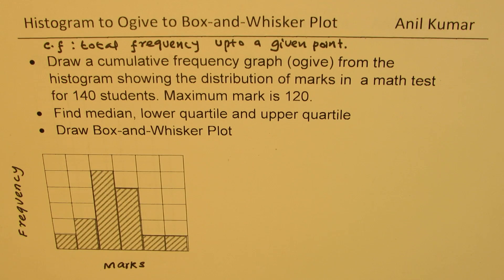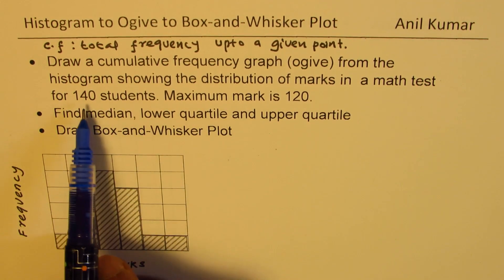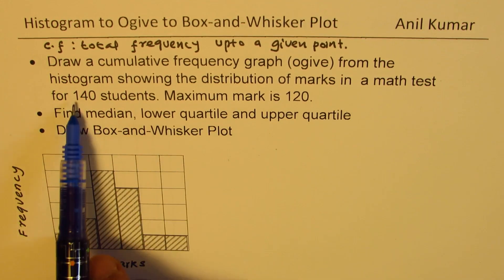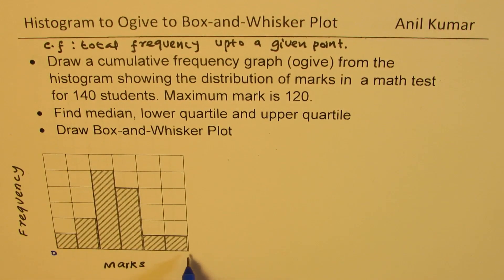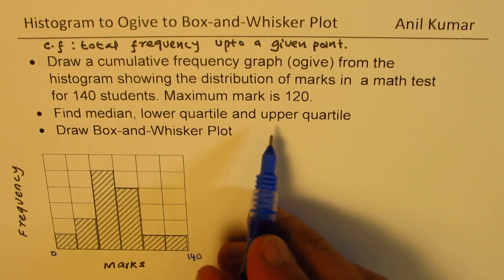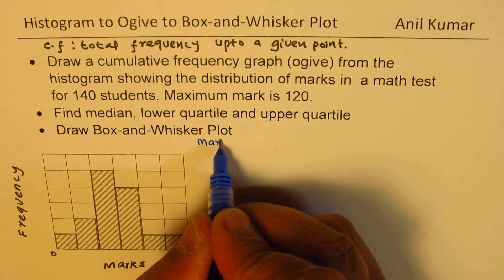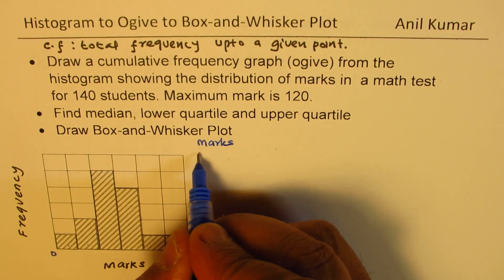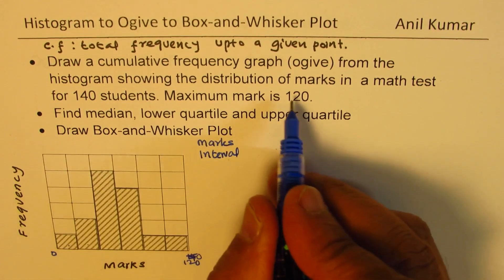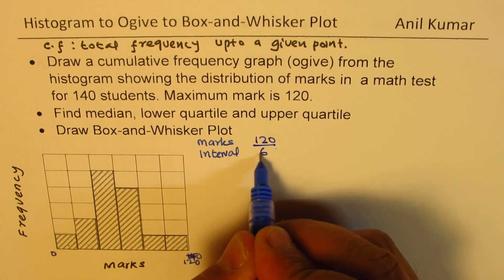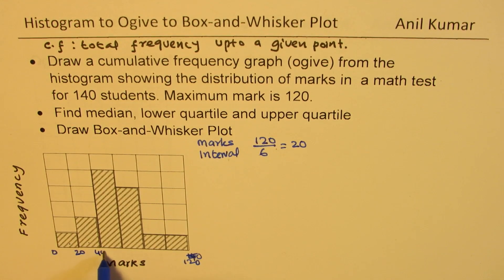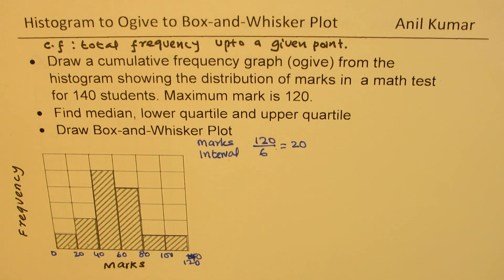We need to figure out the information from the histogram. The total number of students is 140, so the y-axis goes from 0 to 140. The maximum marks is 120. We have 6 intervals, and 120 divided by 6 is 20, so the mark intervals are 20, 40, 60, 80, 100, and 120. So the x-axis is clear.